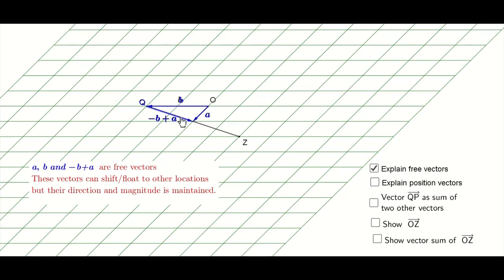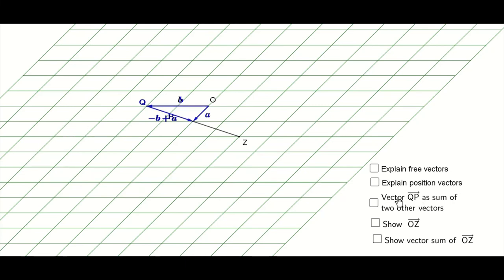The question was, what is OZ? OZ is made out of sum of two other vectors, right? 2A minus B, isn't it?